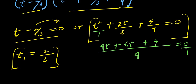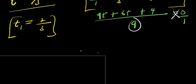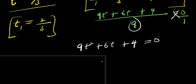Now this is over 1, I can decide to cross multiply — the 9 will multiply the 0, and that is 0. So what I'm going to have is 9t squared plus 6t plus 4 equals 0. Now I can check if there is any number I can divide 9, 6, and 4 by. Obviously, no. So I'm going to solve it using the formula method.